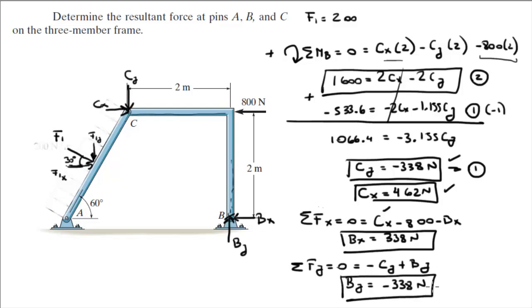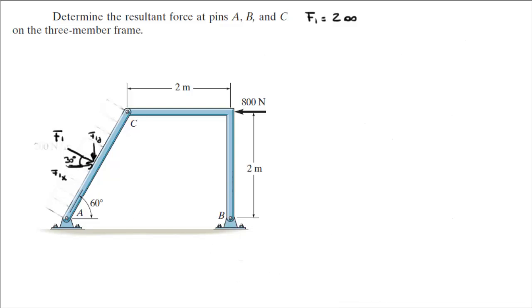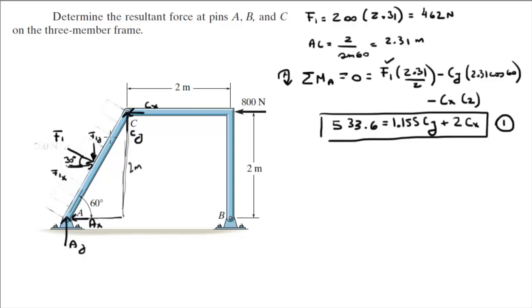And remember, when you have a negative sign all it means is that it's going on the opposite way that we originally draw it on the free body diagram. We draw BY going up in reality it's reacting down. So, now we got to go back to this part.